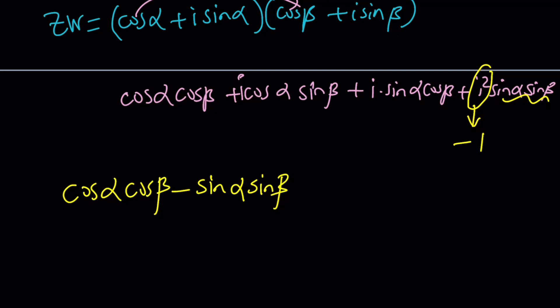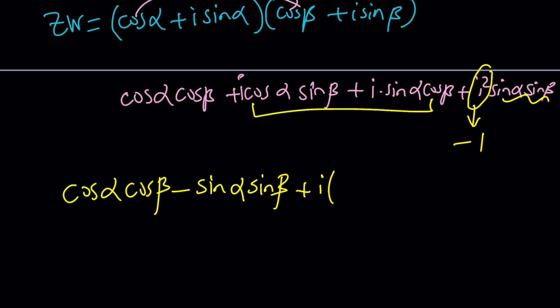So let's go ahead and negate that last term and put it together with the other piece, which makes up the real part. This is the real part, and then this is going to be the imaginary part. Let's factor out an I and write it as follows. I always want to write the sine first — I don't know why, but that's how I memorize them. Now what is that equal to though? We found it, but what does it mean in terms of cosine of alpha plus beta?